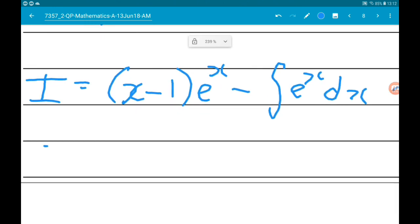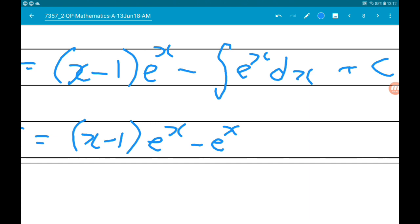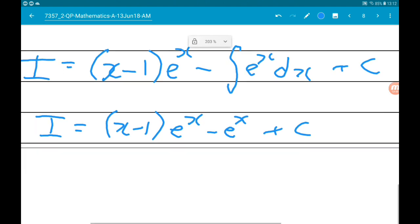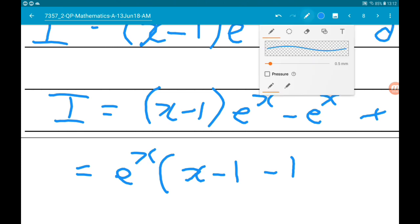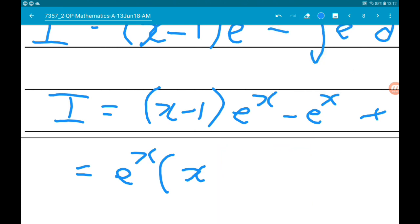So this is x minus one, e to the x minus e to the x plus c. Now it might make life easier to find c if we factorize this a bit. So this is a common factor of e to the x. So this is e to the x times x minus one, minus one, which on a good day is minus two, and then we got plus c.